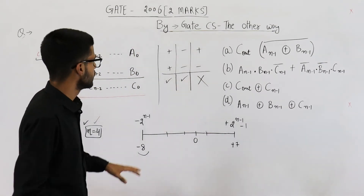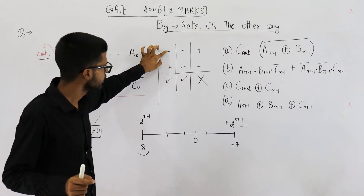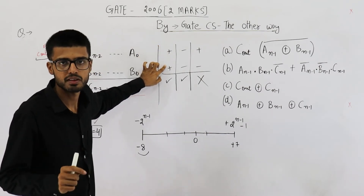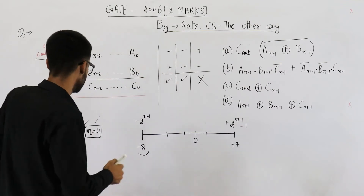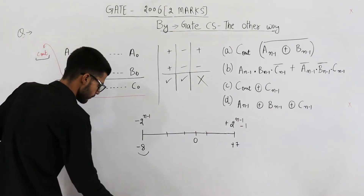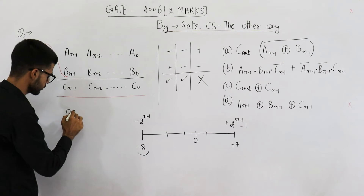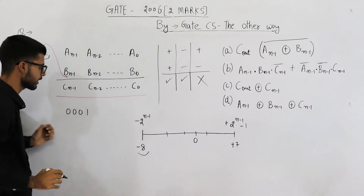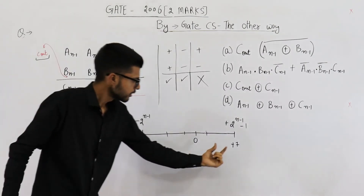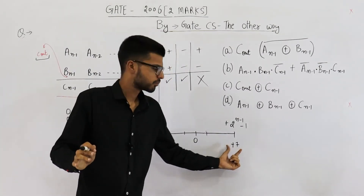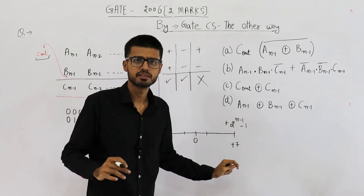Under what conditions will we get overflow? If the numbers you are adding are positive and the result is negative, that means there is overflow. You are adding positive numbers — if you add 1 and 7, to 7 you add any positive number in the range except 0, you will just move out of the range. That means 7 plus 1 will cause overflow.